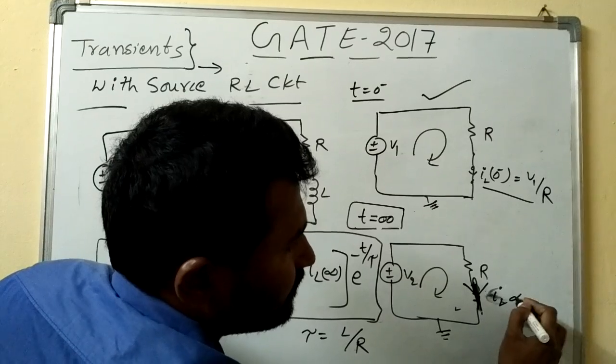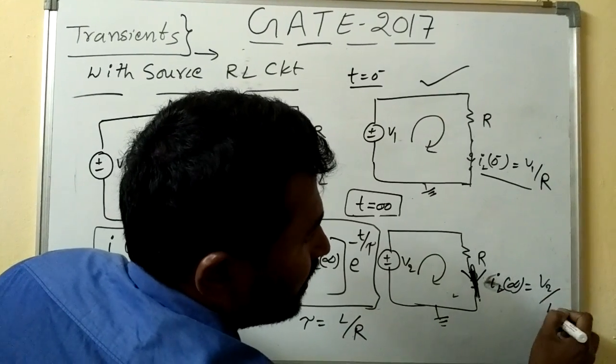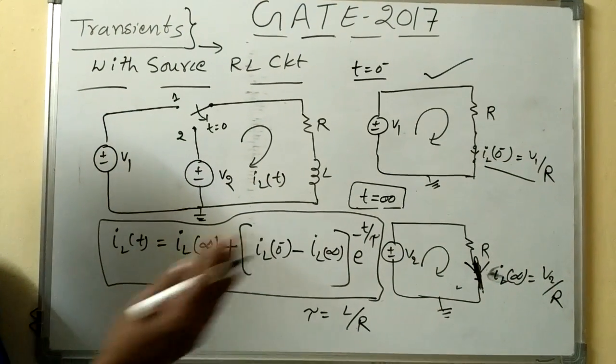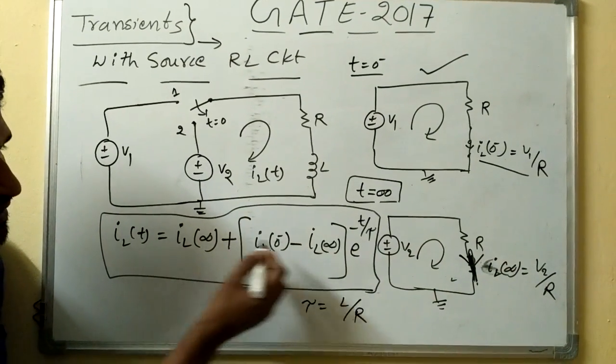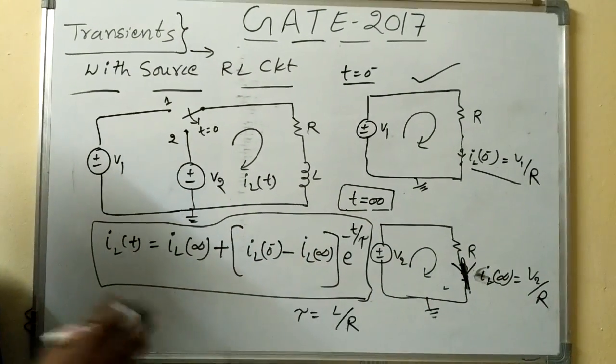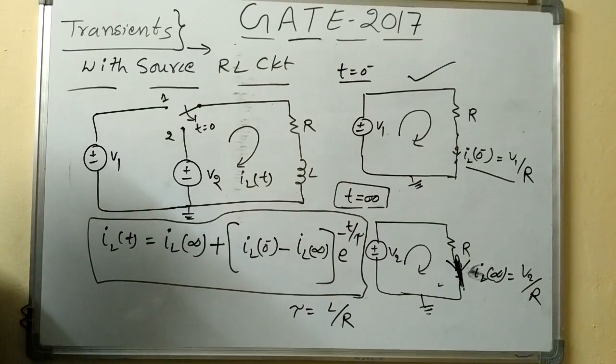So, what is this current iL of infinity, nothing but V2 by R, right. So, we have to put this iL of infinity here, iL of 0 minus here, then we can get easily the iL of t for t greater than 0.